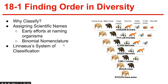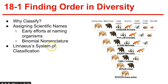Binomial nomenclature is a two-word naming system. In binomial nomenclature, each species is assigned a two-part scientific name. The first part is the genus, which is a group of closely related species, and the second part is unique to each species in the genus. We then used Linnaeus' system of classification.